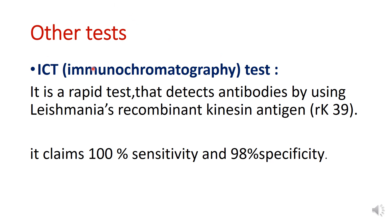What other tests can be done to diagnose Kala-Azar? Immunochromatography test — this is a rapid test which detects antibodies by using Leishmania's recombinant kinesin antigen, that is RK39. And this claims 100% sensitivity and 98% specificity.